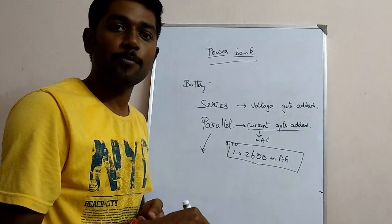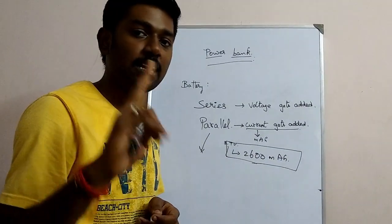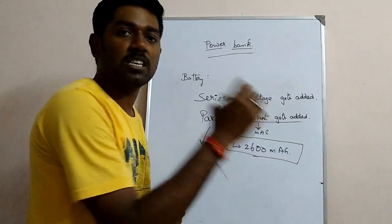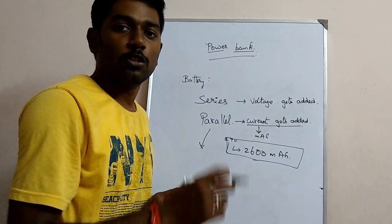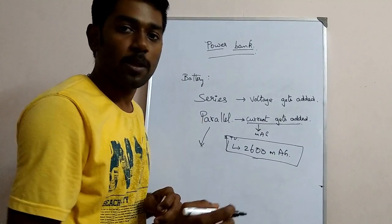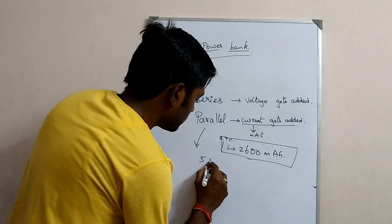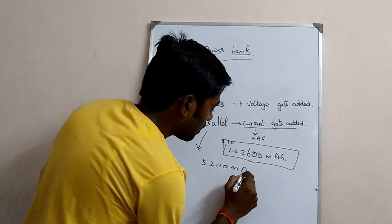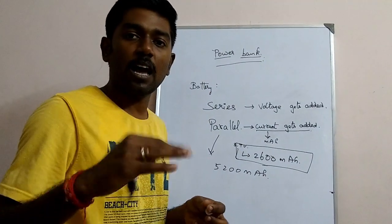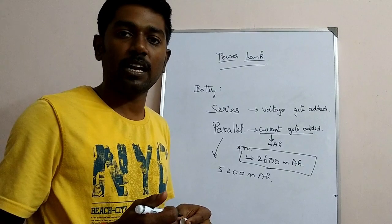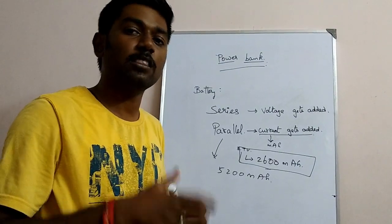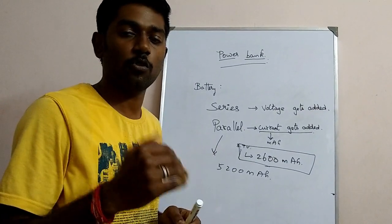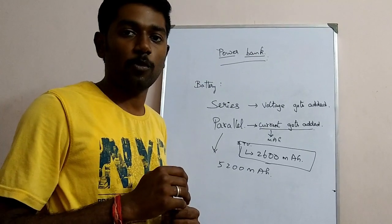In this case, we have 2 batteries, each is 2600mAh. So if you have the power bank, it is 5200mAh. If you have 4 batteries, it is 10,000mAh or 11,000mAh, up to 20,000mAh. So if you have the power bank, it will be easier to design.